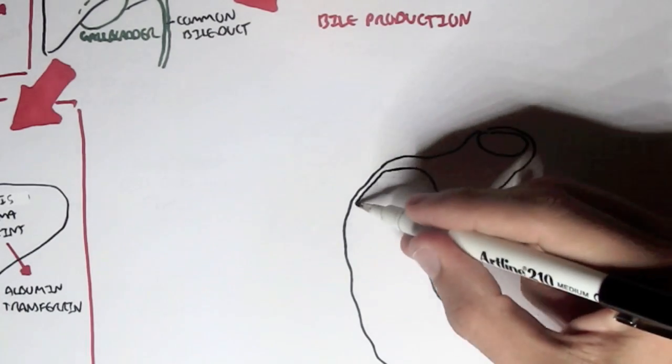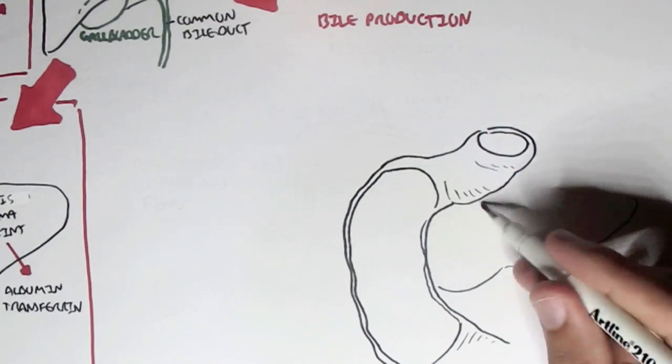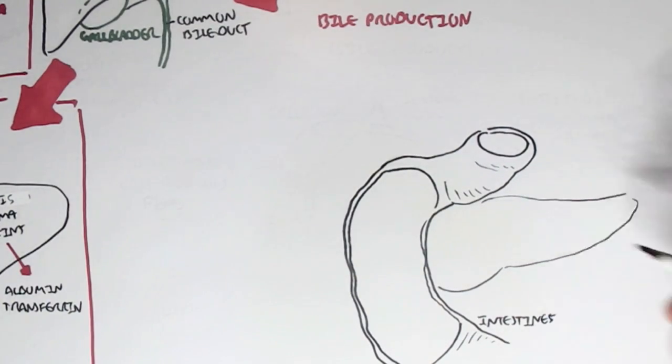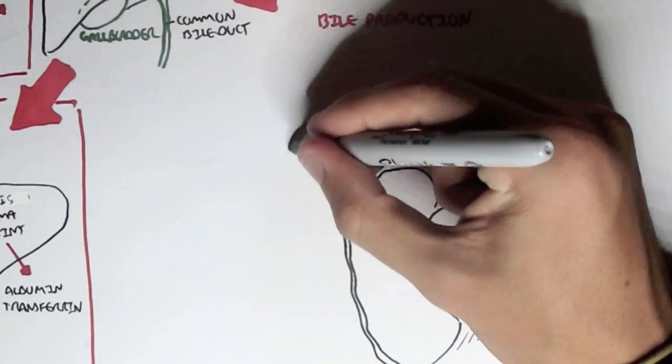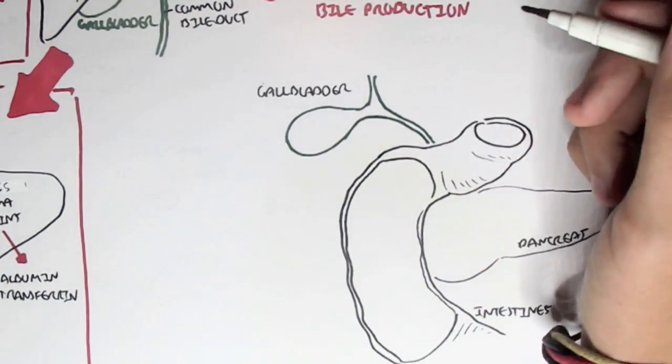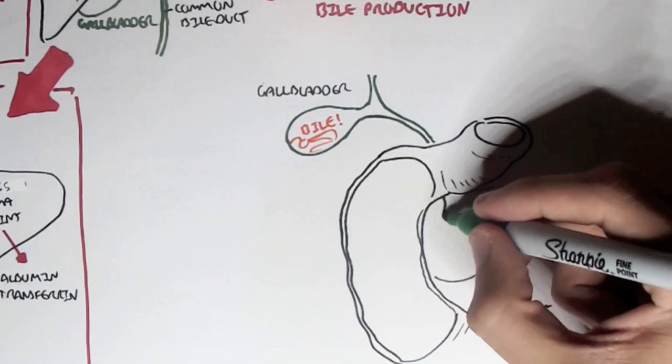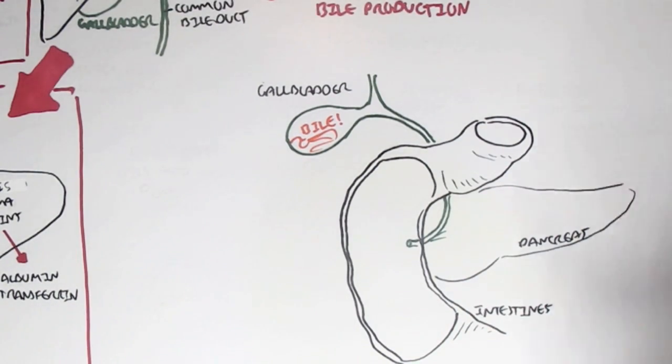Let's look at this in a different diagram. Here we have the intestines, and we have the pancreas right next to the intestines, the small intestines. The gallbladder is situated here, and it essentially secretes its substances through the common bile duct which enters the intestines. The gallbladder stores bile.